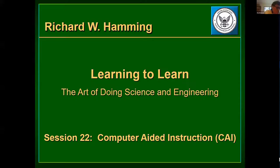We're going to move on to the second lecture, which is on computer-aided instruction. Lecture number 22 was on computer-aided instruction, and the overall theme was something we've heard Hamming say a couple of times: what you learn from others you can use to follow, and what you learn for yourself you can use to lead. As Hamming looks at computer-aided instruction in 1993, he looks at it from two perspectives: training and education.